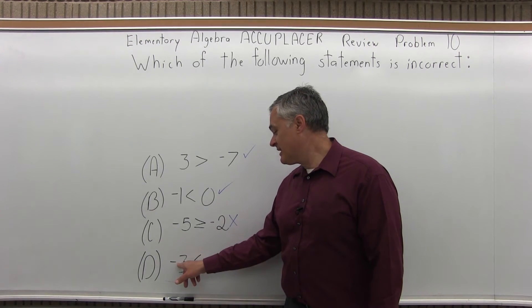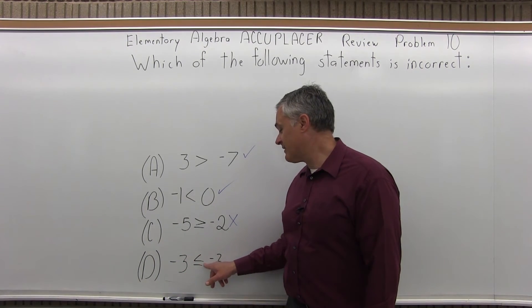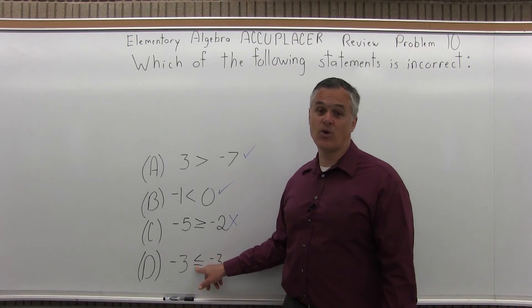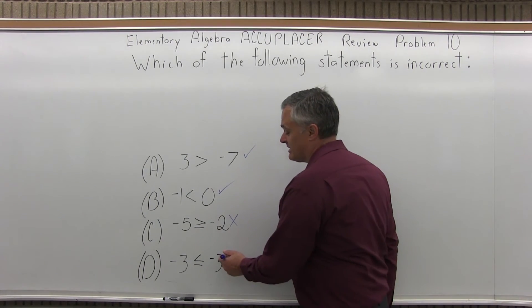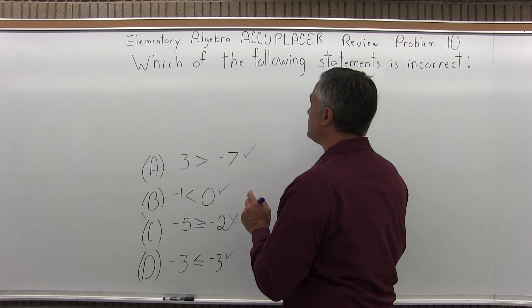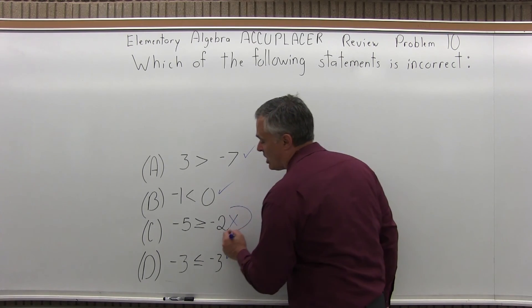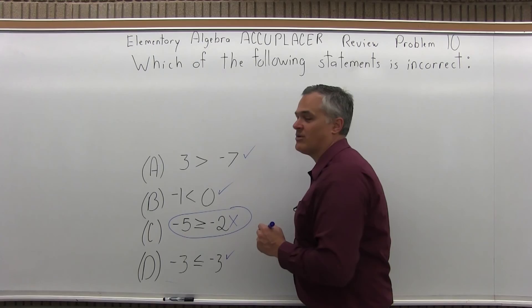Just to be sure, we can check D, negative three is less than or equal to negative three. Because of the line under meaning or equal, option D is also correct. So, which of the following statements is incorrect? Option C is the incorrect statement. Thank you.